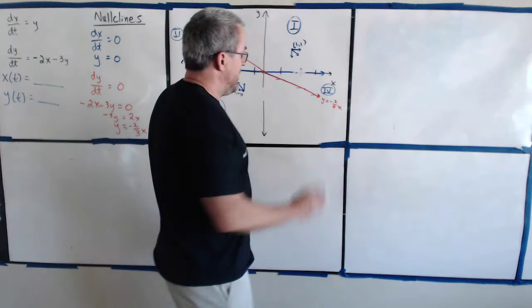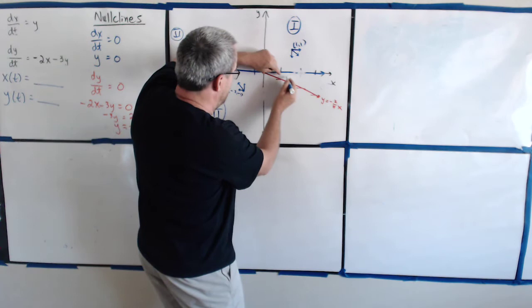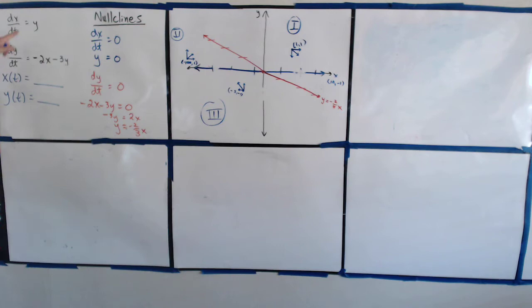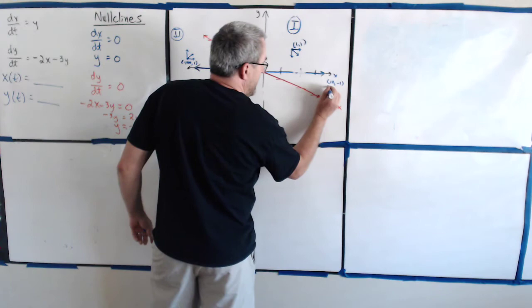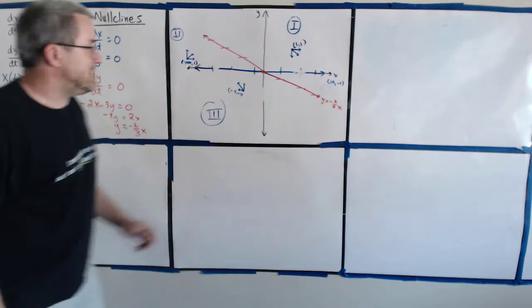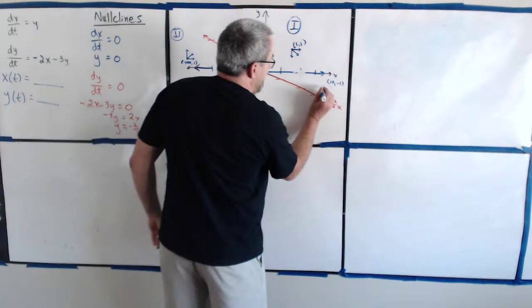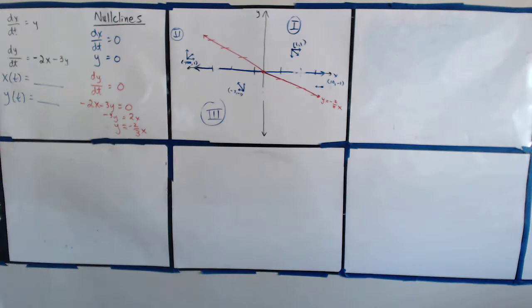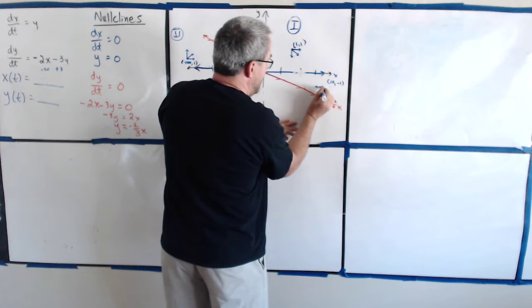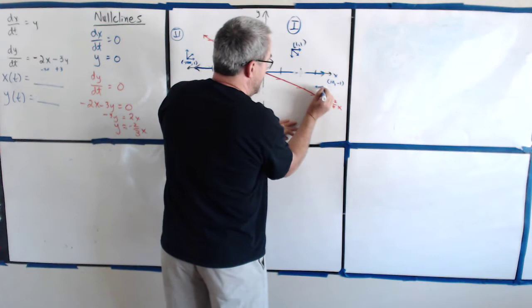Finally, in region four, let's pick the point (10, negative one). dx/dt equals y — if y is negative one, dx/dt is negative, so x is getting smaller, moving to the left. For dy/dt: negative two times ten is negative 20, minus three times negative one is plus three, which is still negative. So dy/dt is negative, meaning y is decreasing. The overall trajectory in region four is to the left and down.